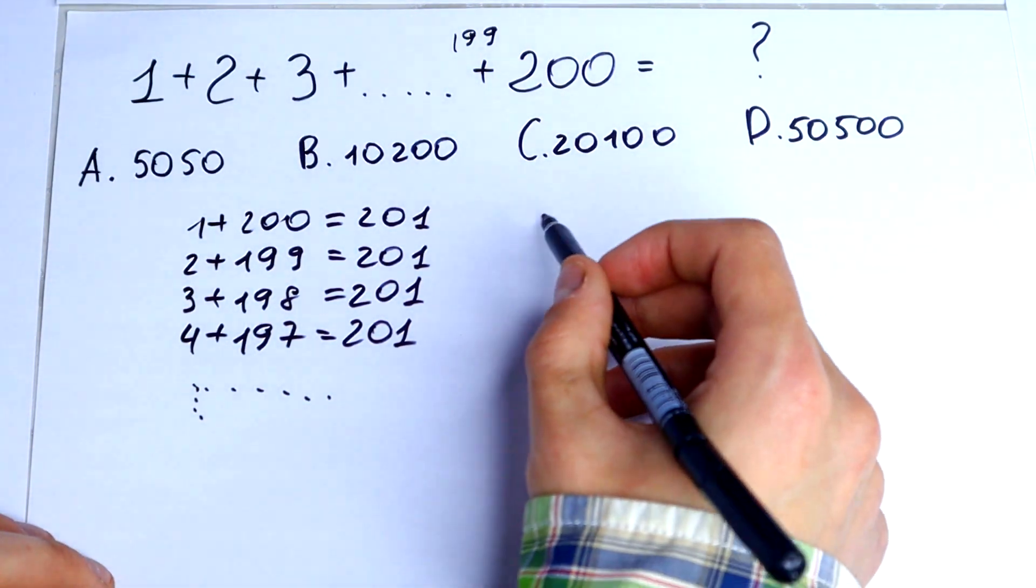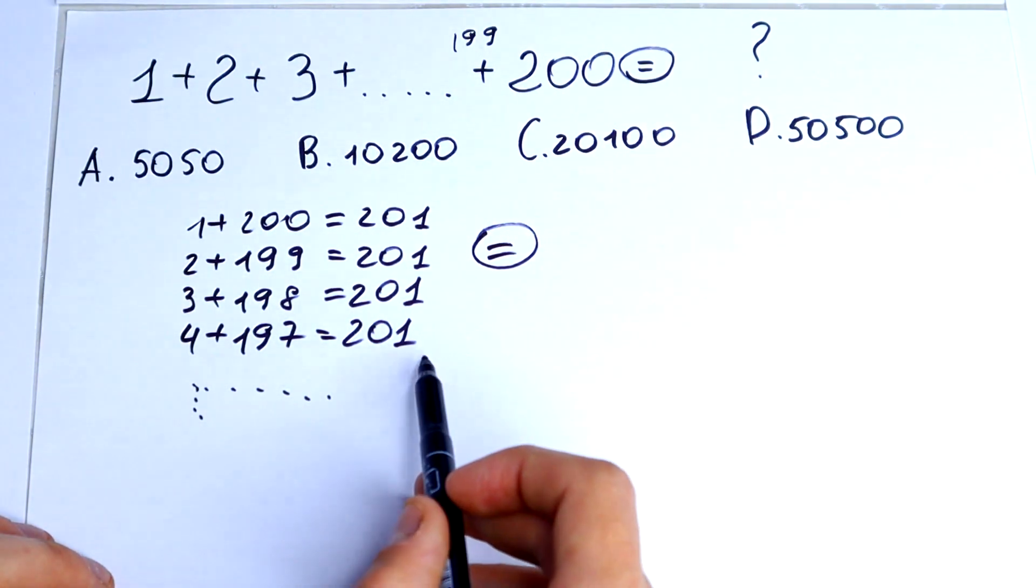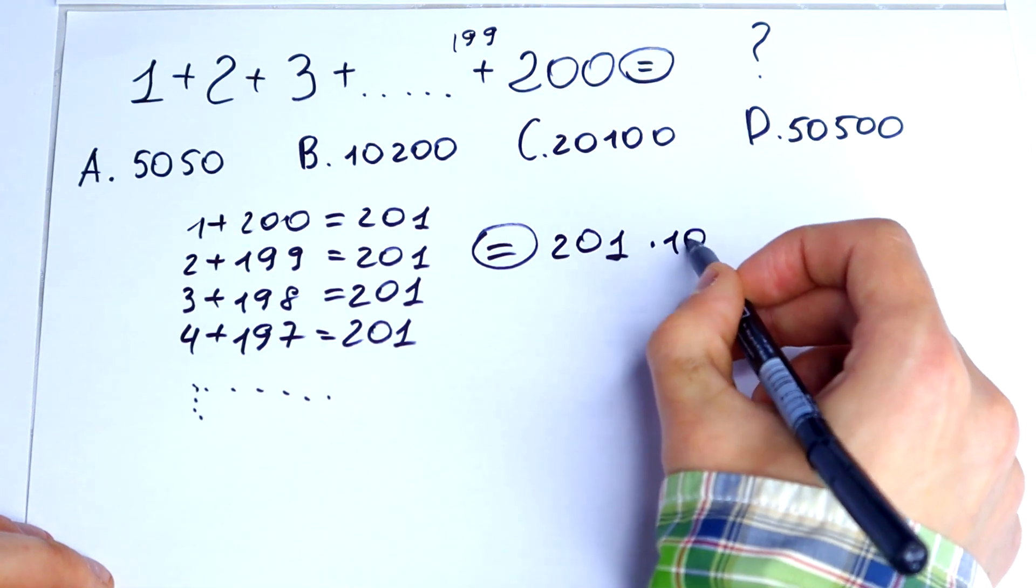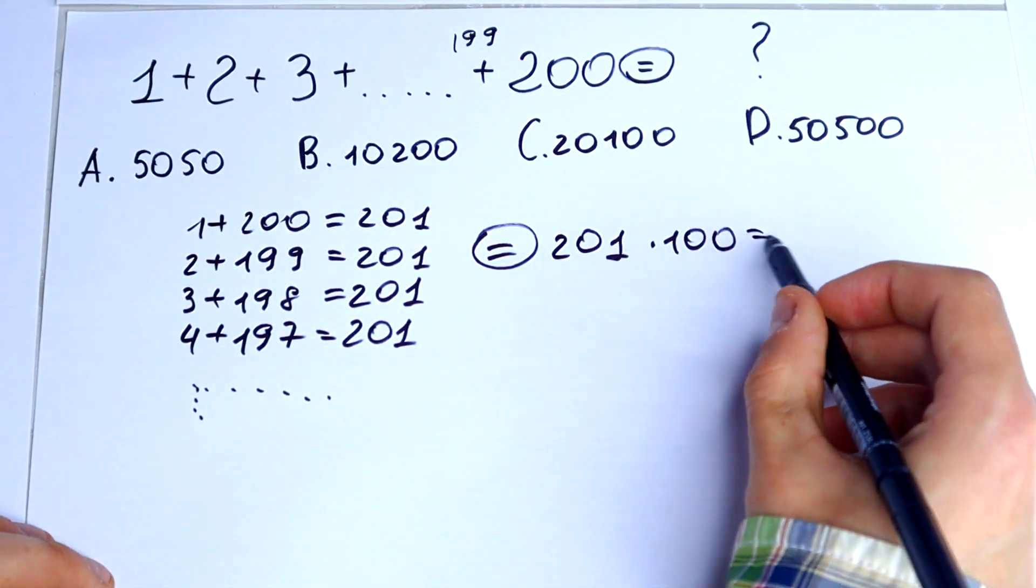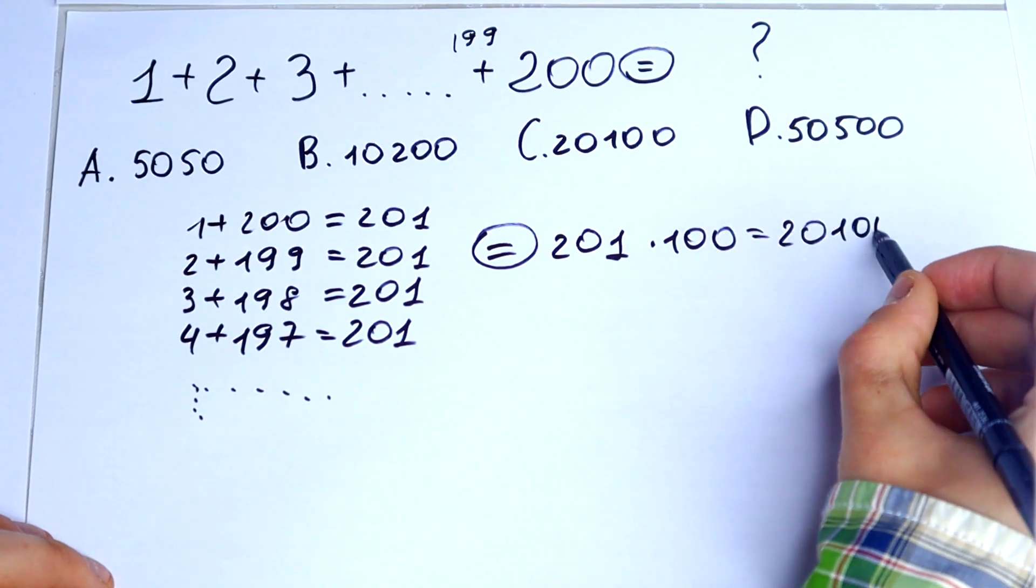So we can write 201 times 100. It would be 20,100.